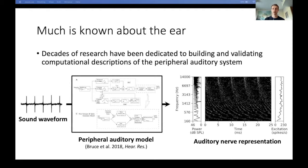I want to start by saying that we really know a lot about the ear. Decades of neurophysiology and modeling work have resulted in good computational descriptions of the ear's signal processing. Given an arbitrary sound waveform, state-of-the-art peripheral auditory models can produce pictures where each row represents an auditory nerve fiber responding to a particular band of frequencies. The x-axis is time, the y-axis is position along the cochlea's frequency axis, and white pixels indicate spikes. Time average firing rates are plotted on the right.